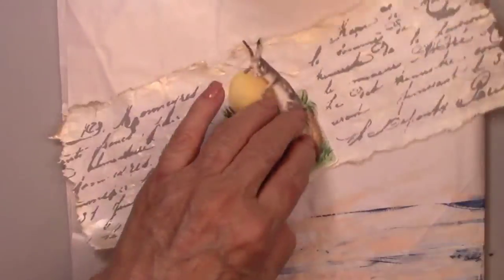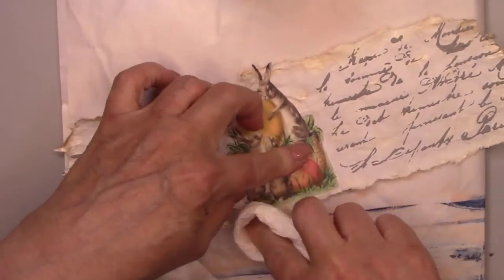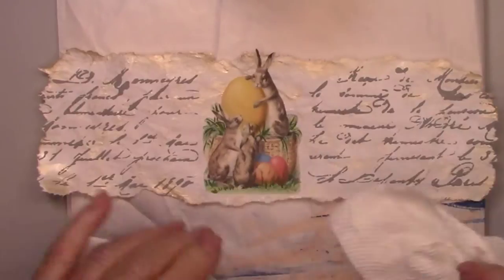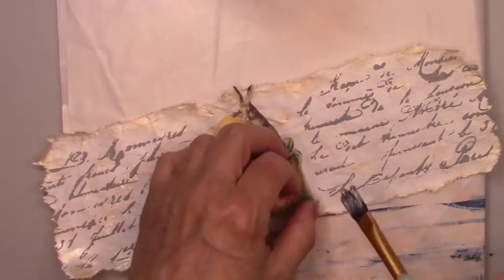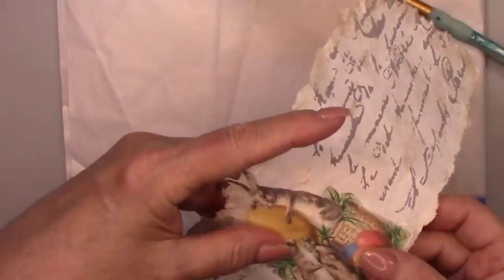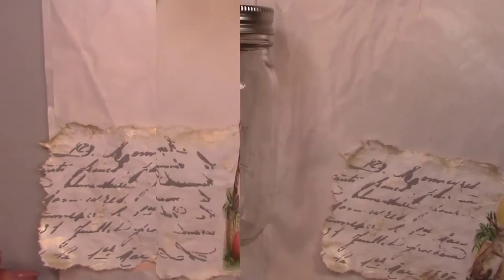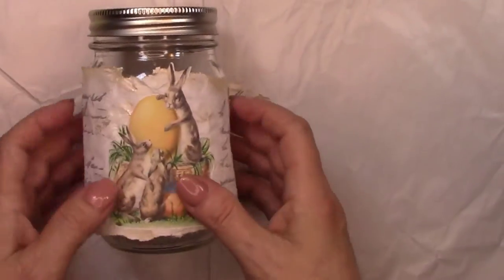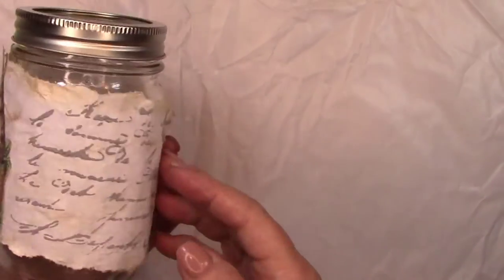I'm using a little bit of Mod Podge to glue the bunny picture to the parchment. And here's how cute this looks on a mason jar.